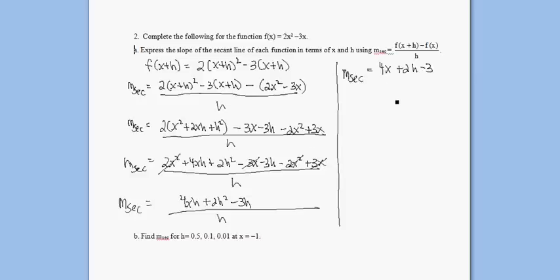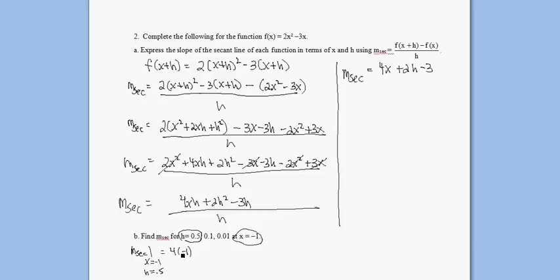This generates the slope of any secant line that goes through this function at any x value and some corresponding h, which is some distance away from x. For the first calculation, h is 0.5 and our x value is negative 1. The slope of our secant line would be 4 times negative 1 plus 2 times 0.5 minus 3, which equals negative 6.